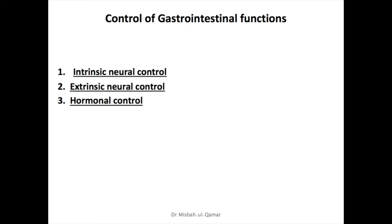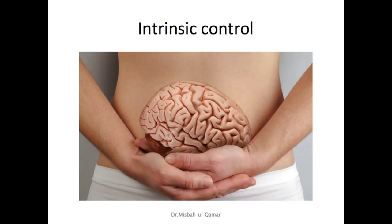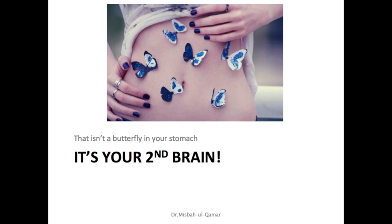Let's focus first on nervous control, starting with the enteric nervous system, which gives intrinsic control. This system is also called the gut brain or little brain — it is a highly developed control system with about 100 million neurons, nearly equal to the number in the entire spinal cord. It is called the brain of the gut because it can integrate sensory information and effect complex motor responses independent of the CNS, and it releases a variety of neurotransmitters just like the CNS.